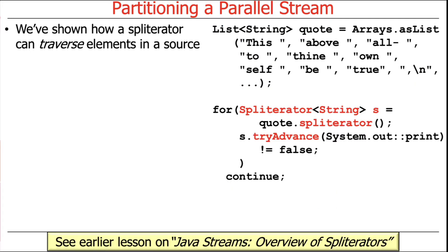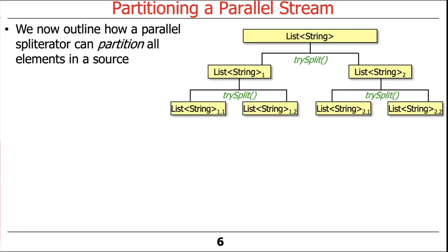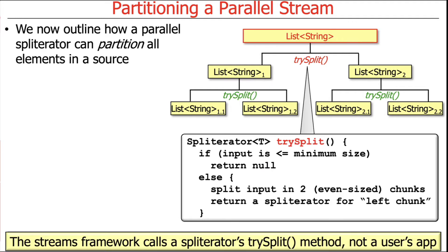We showed earlier how you can use a spliterator to traverse the elements in some data source — for instance, using the tryAdvance method to walk through each element one at a time. Now we're going to talk about how a parallel spliterator can be used to partition the elements in a source up into chunks. The trySplit method has to be implemented for parallel spliterators, but not for sequential ones.